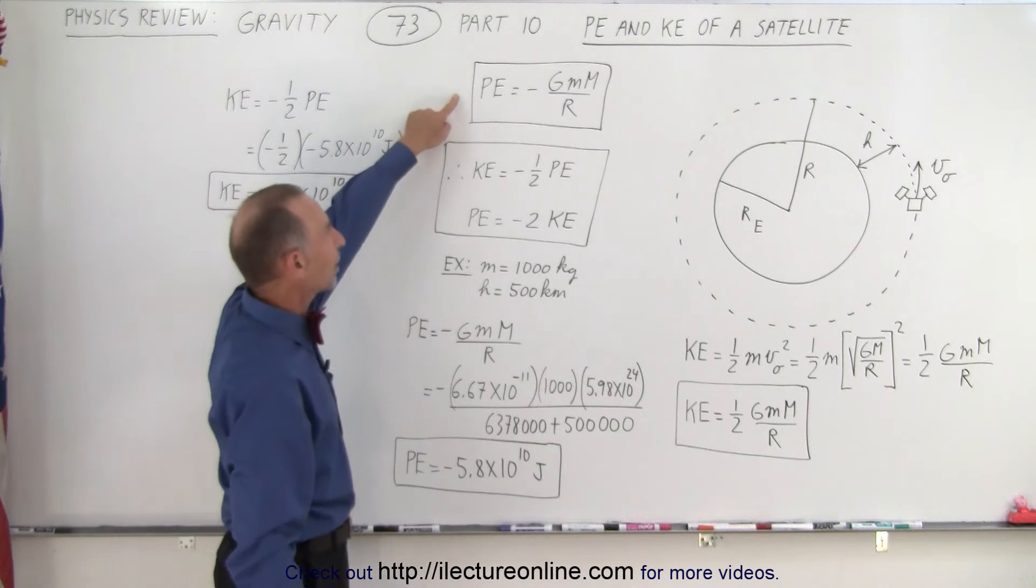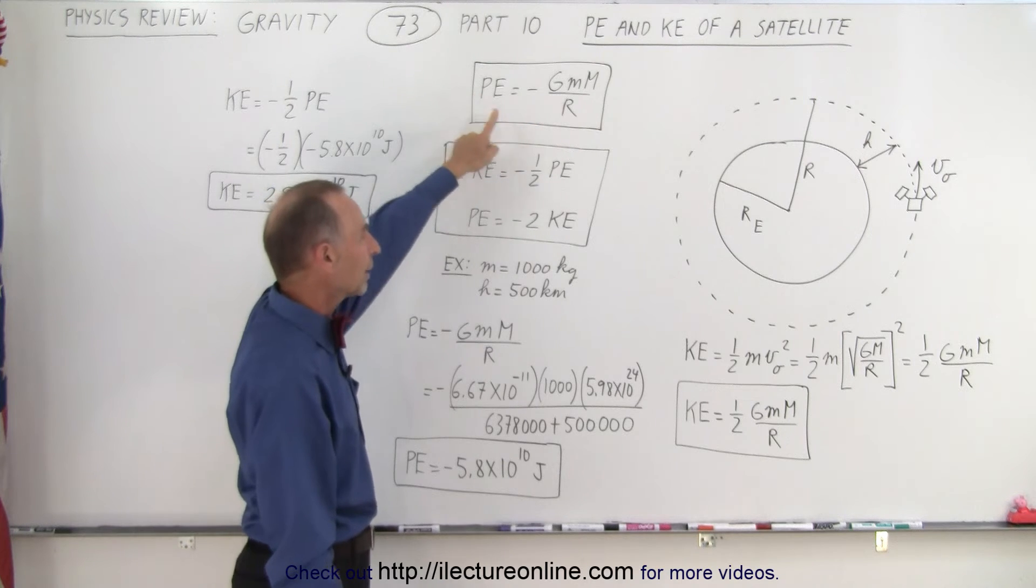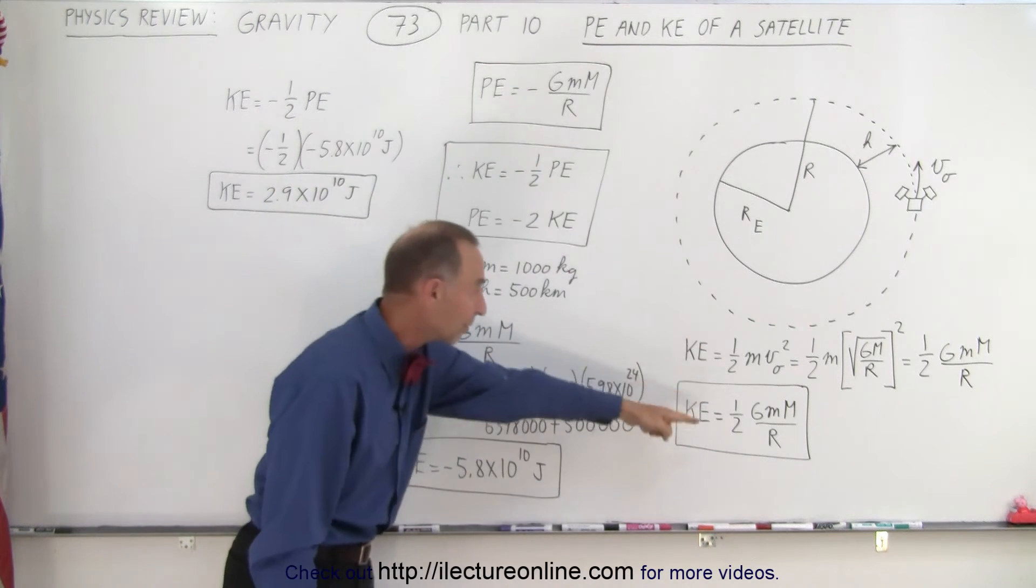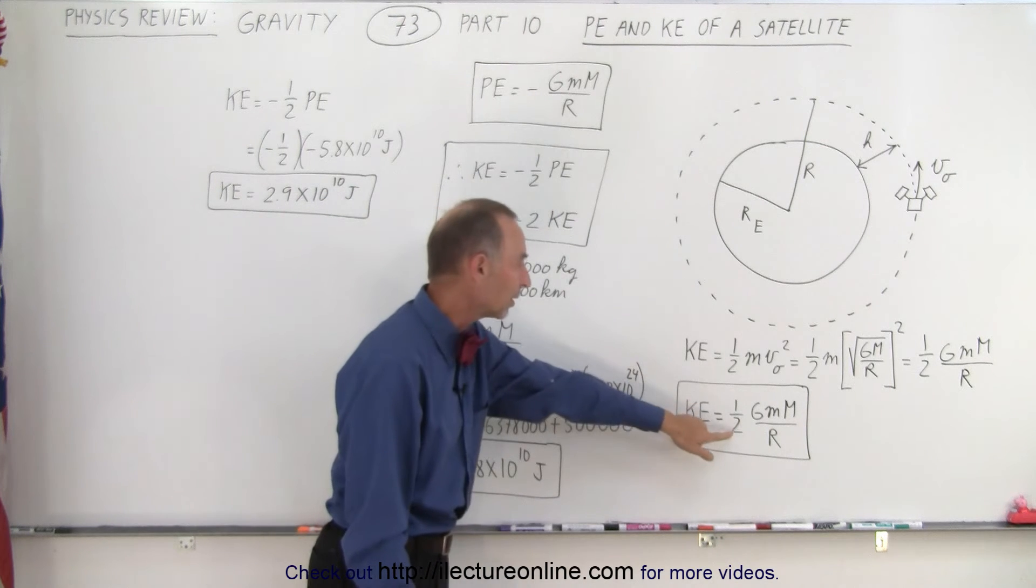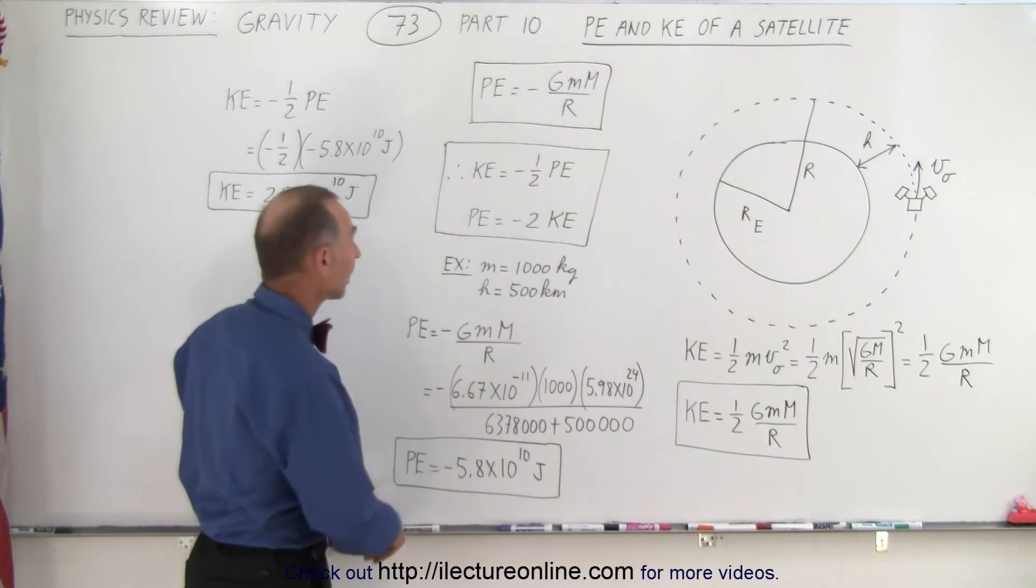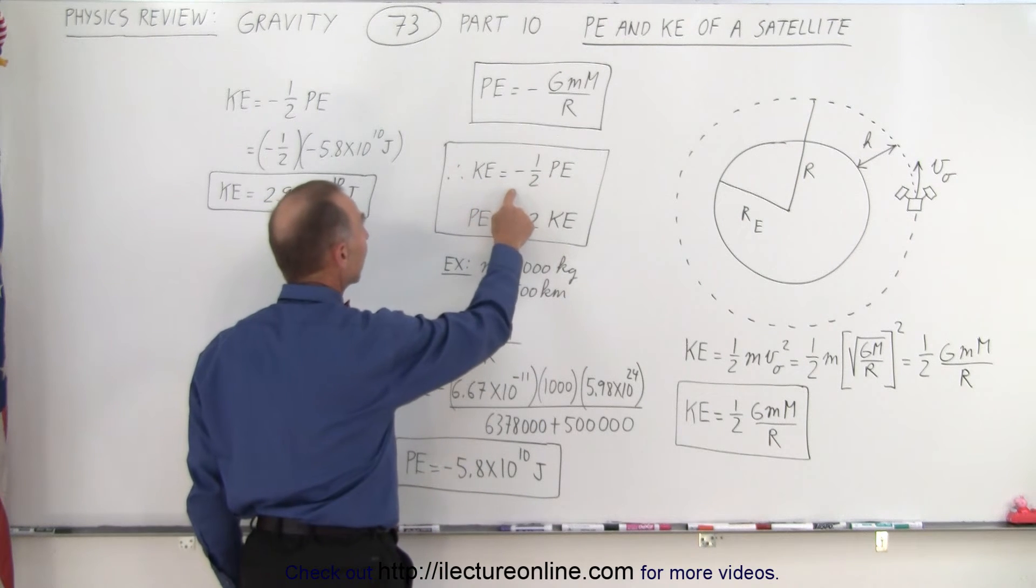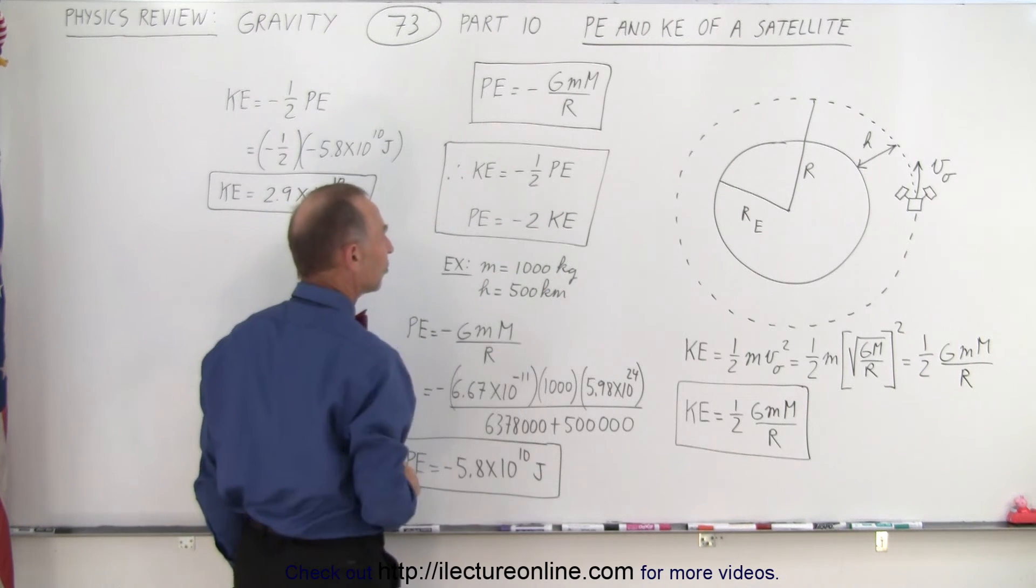Notice that we know that the potential energy is equal to minus gmm over r. Now compare that to the kinetic energy you see a big similarity. The only difference is that here you have a negative which you don't have over there, here you have a 1/2 which you don't have over here, which means that the kinetic energy is equal to negative 1/2 times the potential energy, or the potential energy is negative twice the kinetic energy.